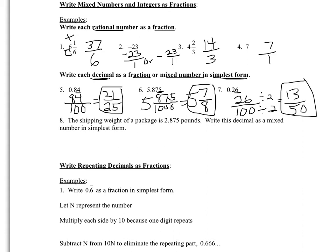The shipping weight of a package is 2.875 pounds, or 2 and 875 thousandths of a pound. Write the decimal as a mixed number in simplest form. You're going to keep that whole number part, so this is going to be a mixed number. 875 ends in the thousandths place, so we put that over 1,000. Since we just did one above, we know this simplifies to 2 and 7 eighths of a pound.